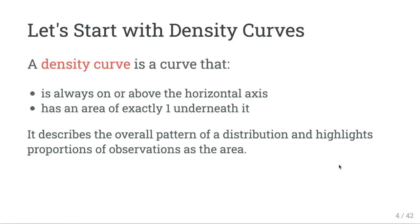So first, what is a density curve? A density curve is a curve that is always on or above the horizontal axis — so it's always above zero or at zero — and has an area of exactly one underneath it. All the area under the curve is one. This is going to describe the overall pattern of a distribution and highlights proportions of observations as the area.